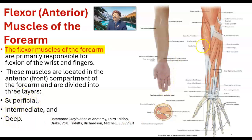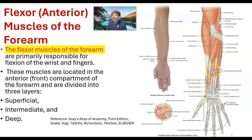We have the superficial muscles like pronator teres, then flexor carpi radialis, then palmaris longus, and flexor carpi ulnaris. Then we have the intermediate muscle layer — only one muscle — the flexor digitorum superficialis. We have deep muscles like the flexor pollicis longus and the flexor digitorum profundus.